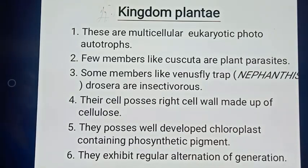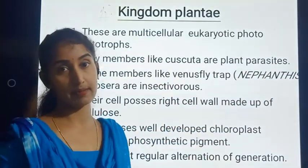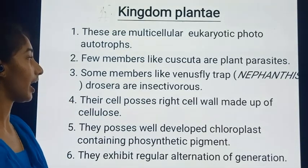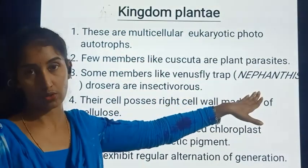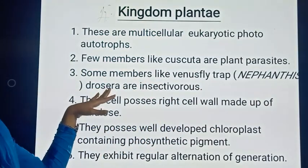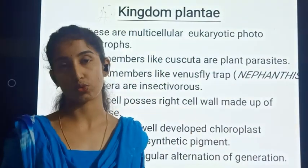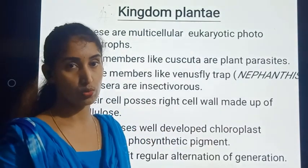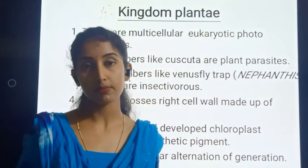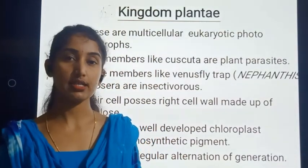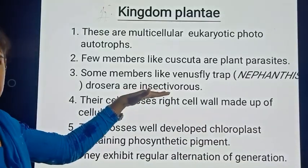A second characteristic is that a few members like Cuscuta are plant parasites — they harm their host plants. Some members such as Venus flytrap, Nepenthes, and Drosera are insectivorous plants. While most members are photoautotrophs, these exceptional insectivorous plants derive their nutrition by catching and digesting insects using enzymes.